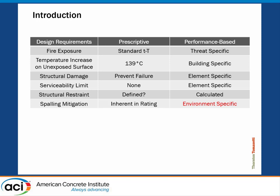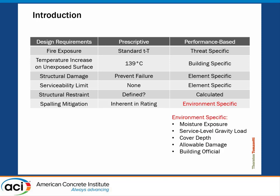Now spalling mitigation can become environment-specific, and this is where you need to go into detail on how to address concrete spalling. Moisture exposure is one really big element. What's the level of service-level gravity load as a percentage of the capacity — are you at 20-30% or more in the 5-10% range? That can have a big effect on spalling. Your cover depth, what allowable damage are you okay with — say, in a tunnel situation with spalling down on first responders versus a big building where some spalling off a wall may be okay — and what the building official will even allow.